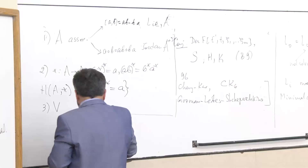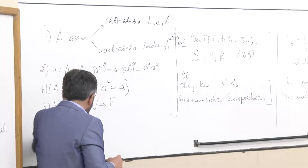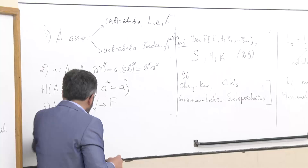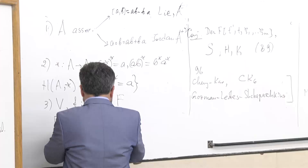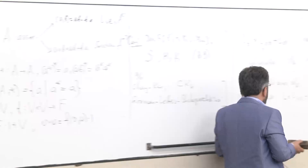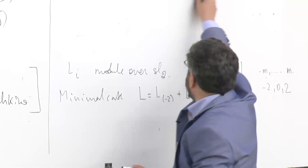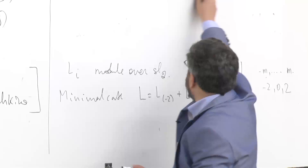There is a third example: let V be a vector space with a symmetric bilinear form. We consider the direct sum of the field and the space. The identity is the identity; if you want to multiply two elements from V, you do it via the form. That's also a Jordan algebra.